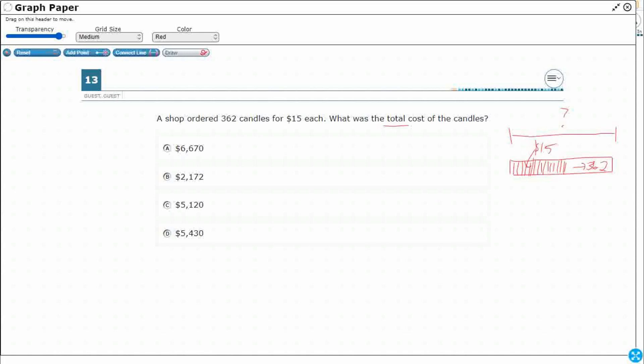So I could do repeated addition of 15, 362 times. Another way to do it would be multiplication. So let's set this up. Since we're dealing with equal groups here, let's set this up as 362 times 15.